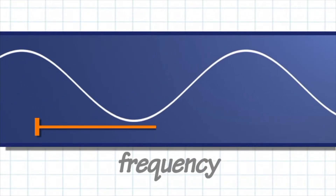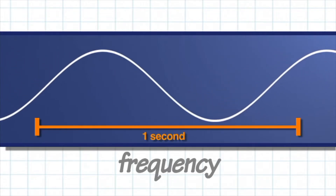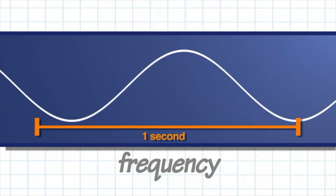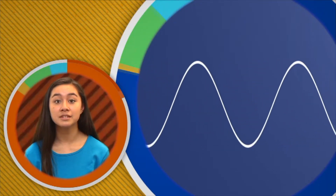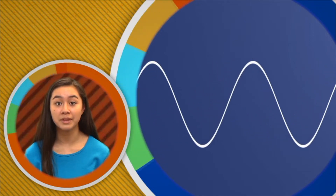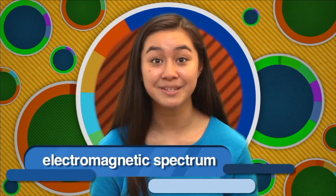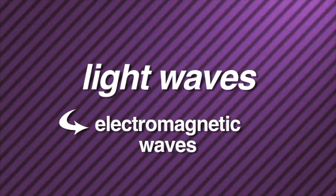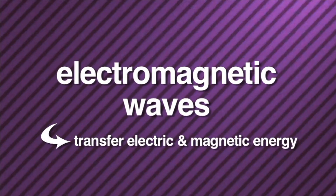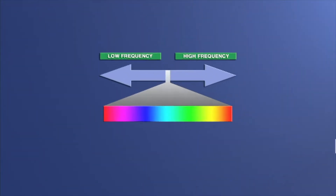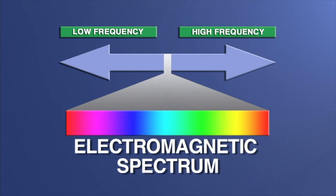Frequency is another property of light waves. This is a measurement of the number of waves that pass a certain point in a given time period. Frequency is a very important property of light waves because it is one of the properties that set light waves apart from other kinds of waves. The frequency of a light wave determines where it appears on something called the electromagnetic spectrum. Light waves are a special kind of waves called electromagnetic waves, which transfer electric and magnetic energy, and those waves are part of the electromagnetic spectrum — the name for the range of electromagnetic waves in order of frequency.